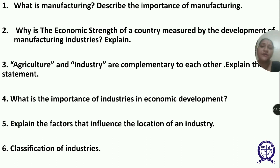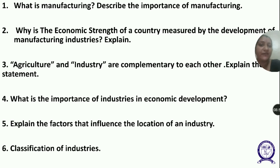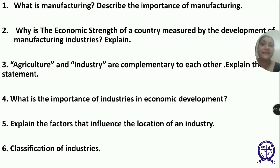The second classification is according to their main role: basic industries and consumer industries. Basic industries supply their products or raw materials to manufacture other goods — like iron and steel, copper smelting, and aluminium smelting. Consumer industries produce goods for direct use by consumers, like sugar, toothpaste, paper, sewing machines, and fans. Basic industries like iron and steel are not directly used by the consumer, unlike consumer industries.